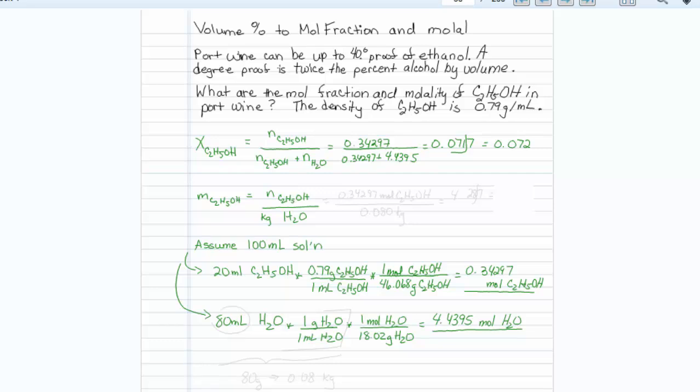Let's work on molality now. The top is the same: 0.34297 moles of ethanol. Now we have to think about kilograms of water. In our original assumption, we had 80 mL of water, and water is 1 gram per 1 mL. This implies we have 80 grams of water, which is 0.08 kilograms of water.